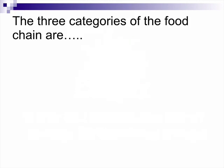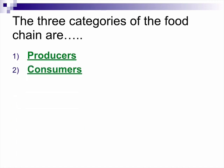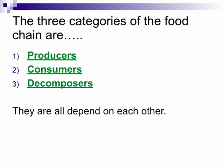There are three categories in the food chain. There are things that produce things, things that consume things, and organisms that decompose things. And they all depend on each other. There's a nice balance of things being produced, consumed, and decomposed.